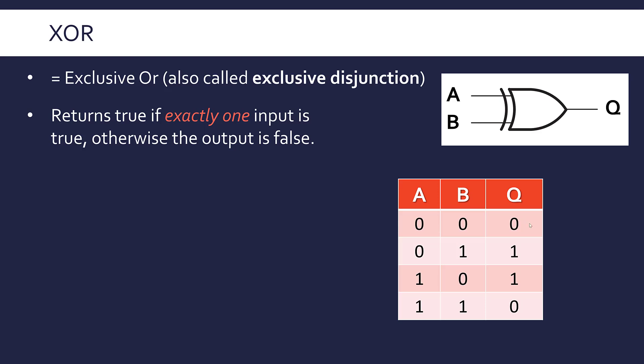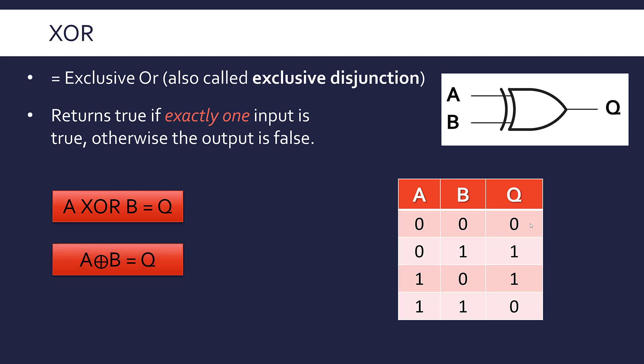When you've got no inputs being true, XOR does return 0 as you'd expect. In terms of notation, you can write A XOR B equals Q, where A and B are input variables and Q is the output variable. The slightly more interesting notation uses the XOR symbol, which is a circle with a plus in the middle — representing XOR. OR can also be represented with a plus, so we add a circle around it to distinguish it from regular OR.